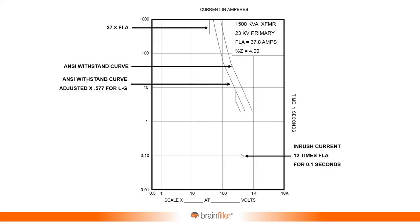We're going to use this example to illustrate how to properly protect transformers and how protective relays operate. Specifically, we'll protect a transformer based on the ANSI C57 through-fault curves, with protection provided using overcurrent relays — looking at both together.